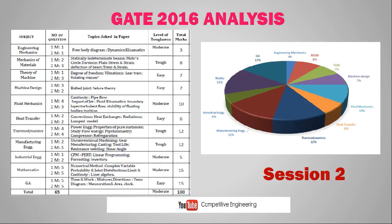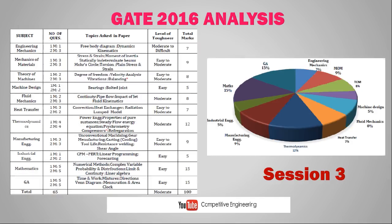For Session 3, the mark distribution shifted slightly: thermodynamics 12 marks, manufacturing engineering 9 marks, mechanics of materials 9 marks, theory of machines 8 marks, fluid mechanics 8 marks (including both fluid mechanics and fluid machinery). Topics remain almost the same: Mohr's circle, degree of freedom, continuity, fluid mechanics, convection, heat exchangers, compressors, casting, cooling, tool life, CPM/PERT, and numerical methods. With a thorough idea of these topics, it is very easy to qualify the GATE examination.